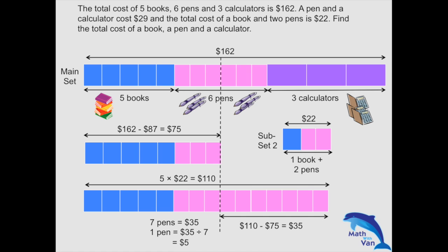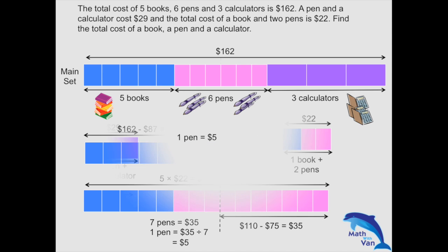Now we substitute this information back to our subsets and calculate. If one pen is $5, two pens are $10, so a book costs $12. Since I already have the cost of a pen plus calculator which is $29, I add one book at $12, giving the solution of $41.